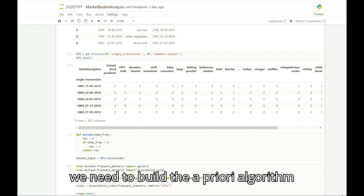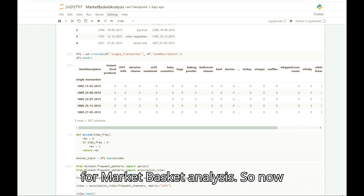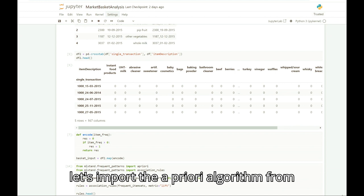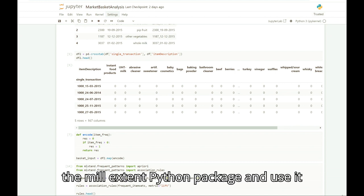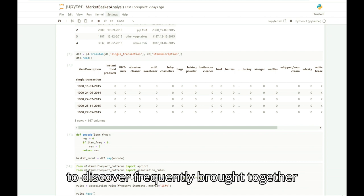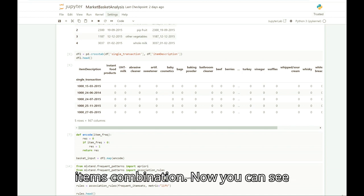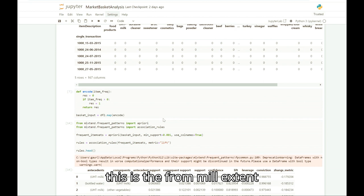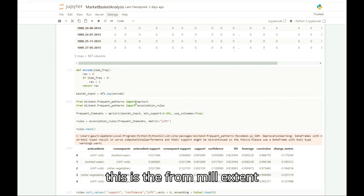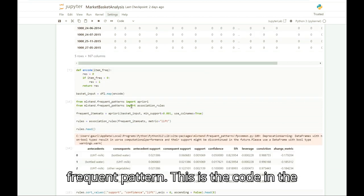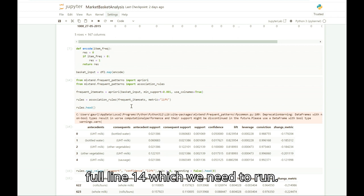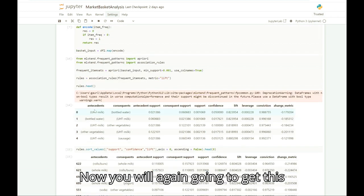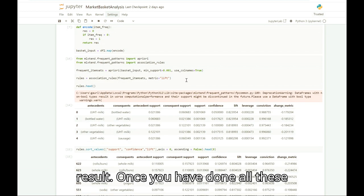We need to build the Apriori algorithm for market basket analysis. So now let's import the Apriori algorithm from the mlxtend Python package and use it to discover frequently bought together item combinations. Now you can see this is the from mlxtend.frequent_patterns code in line 14 which we need to run. Now you will get this result.